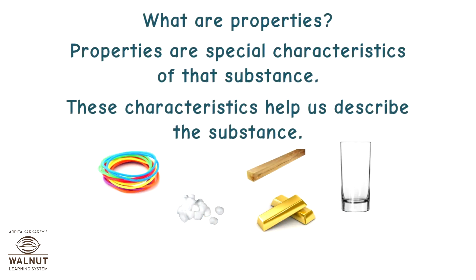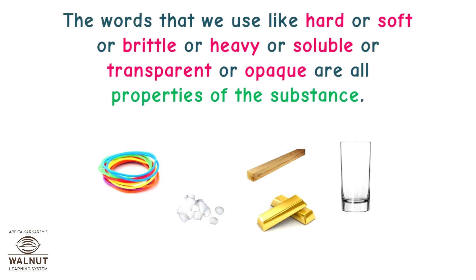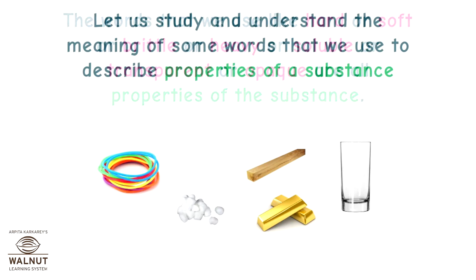What are properties? Properties are special characteristics of a substance. These characteristics help us describe the substance. The words that we use — like hard, soft, brittle, heavy, soluble, transparent, or opaque — are all properties of a substance. Let us study and understand the meaning of some words that we use to describe properties of a substance.